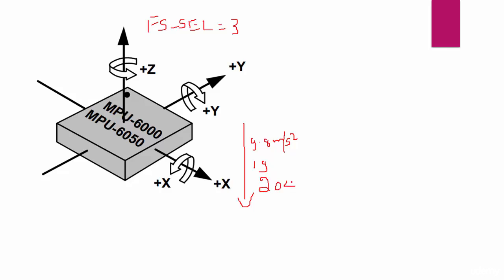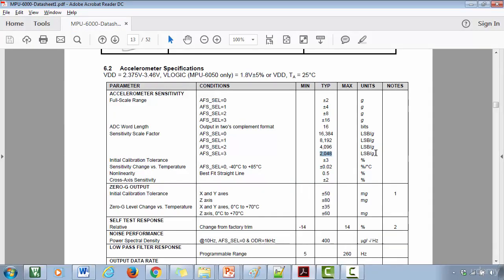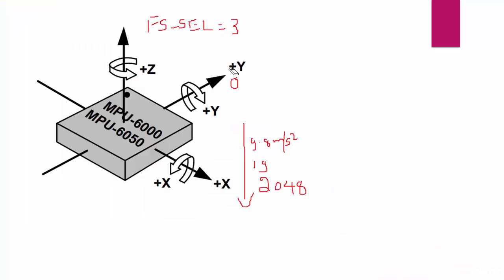Because this document says that per g the value is 2048, and the reading at y must be 0 and the reading at x must be 0 because no force is acting on y or x-axis.